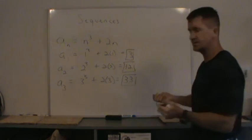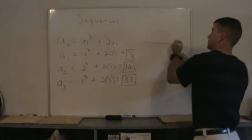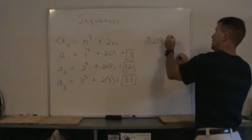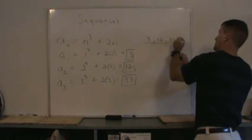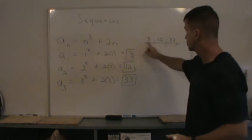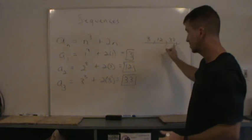And if you want, you can write these terms in this format. Here's my terms: 3, 12, 33, dot dot dot. These are the terms of the sequence. This is the first term, this is the second term, this is the third term, etc.